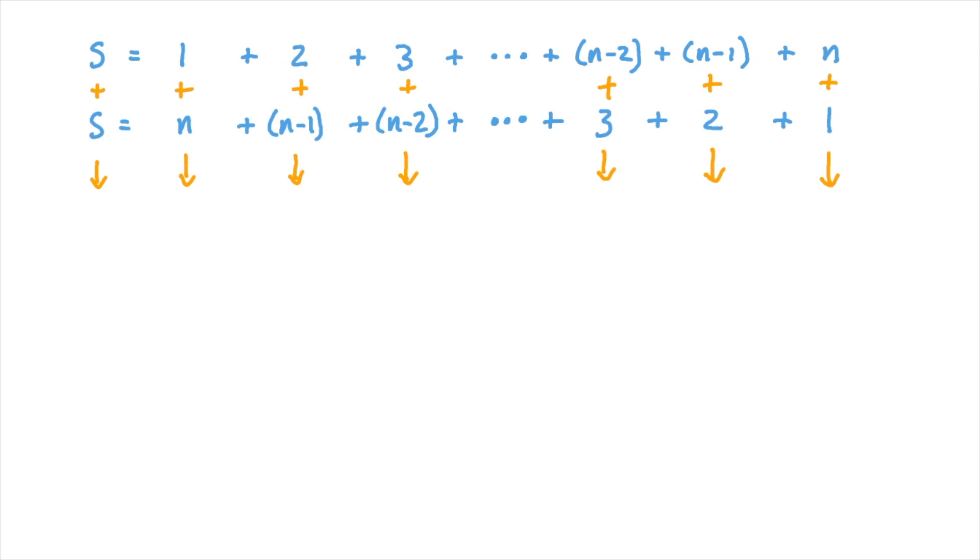So writing out the sum of the numbers from 1 to n forwards and backwards, and then adding those two rows together, firstly we get S plus S is equal to 2S. Then 1 plus n is equal to 1 plus n. 2 plus n minus 1—well, 2 minus 1 is 1, so that's just 1 plus n again. 3 plus n minus 2—well, 3 take away 2 is 1, so we've got 1 plus n again. And so on. And then we get n minus 2 plus 3—well, negative 2 plus 3 is 1, so again we've got n plus 1, or 1 plus n. And so on.